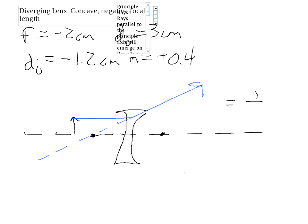Ray number two: rays moving toward the focal point on the other side of the lens will emerge parallel to the principal axis. To draw this ray, put one part of your straight edge at the top of the object and the other part on the focal point on the right side of the lens. Draw the line — it looks like it will go to that focal point, but when it gets to the lens it doesn't. Instead, it emerges parallel to the principal axis. You can then extend that in a dashed line backwards.